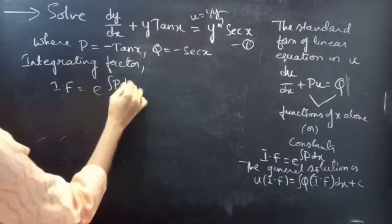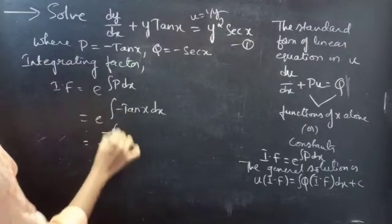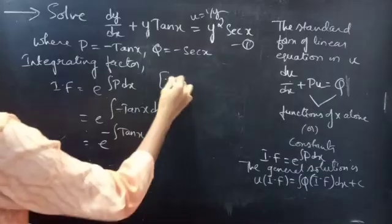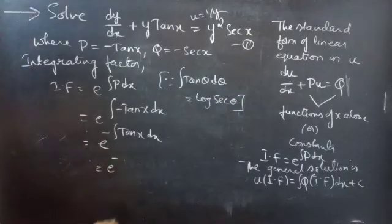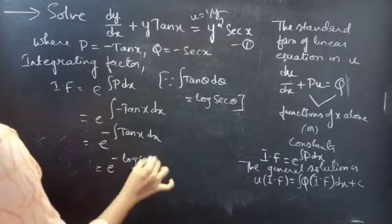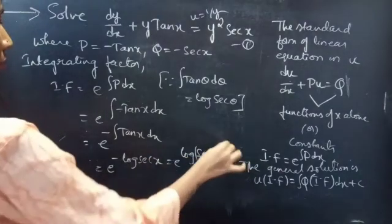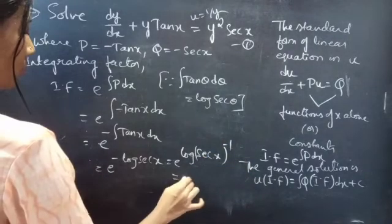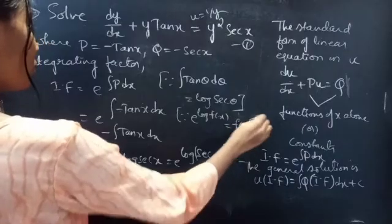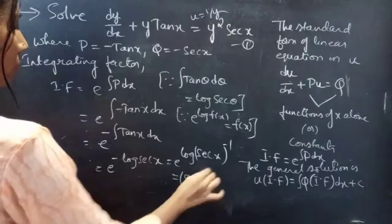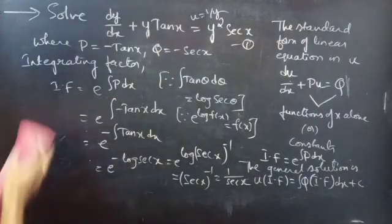The integrating factor equals e to the power of the integral of p dx, which is e to the power of the integral of minus tan x dx. This equals e to the power of minus log secant x, which equals e to the power of log of 1/secant x. Since e to the power log f(x) equals f(x), the integrating factor is 1/secant x, which equals cos x.